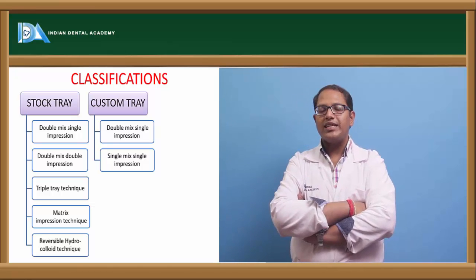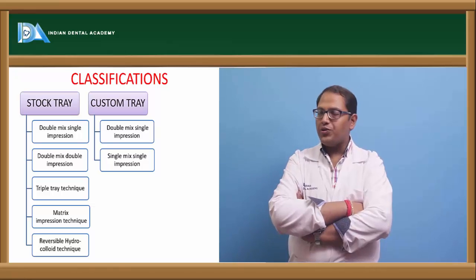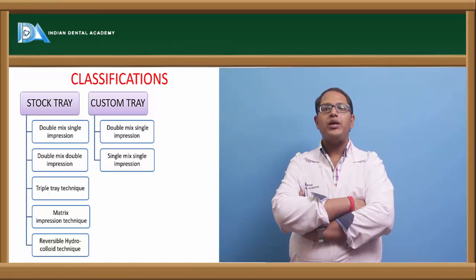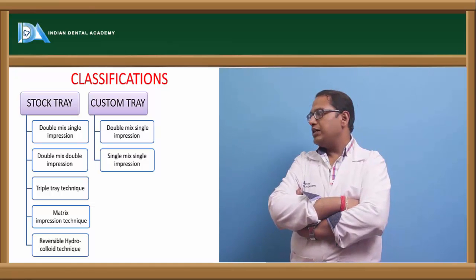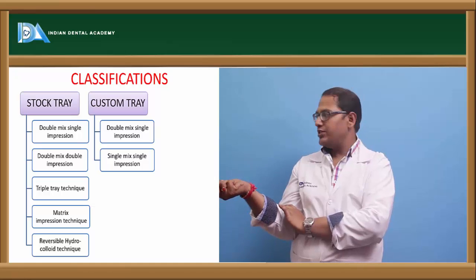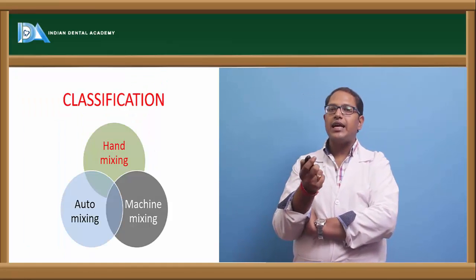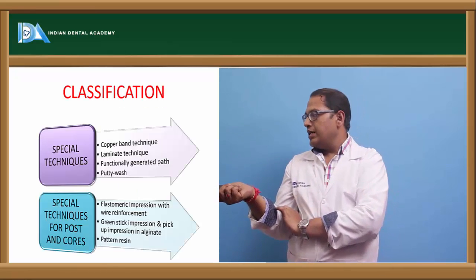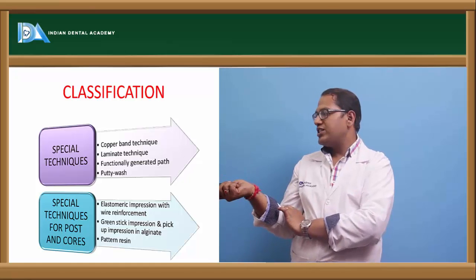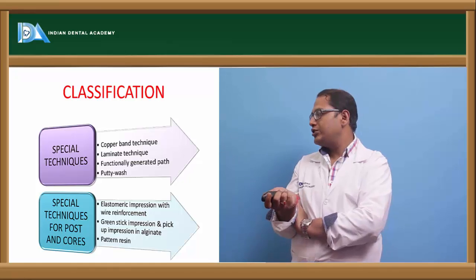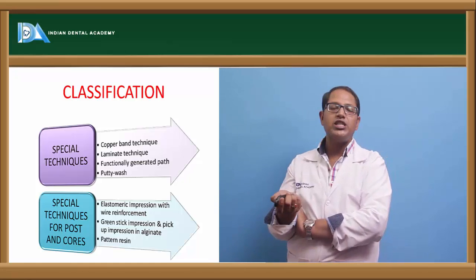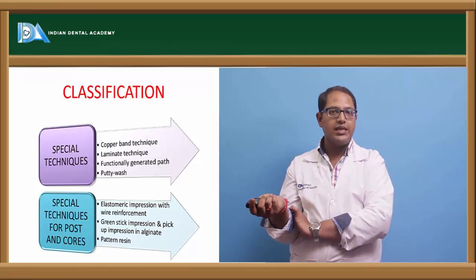The classification of impression techniques includes stock trays and custom trays. With stock trays we have different techniques: double mix single impression, double mix double impression, triple tray technique, matrix impression technique, and reversible hydrocolloid. With custom trays we have double mix single impression or single mix single impression. Classification by mixing method includes hand mixing, machine mixing, or auto mixing. Special mode techniques are copper band technique, laminate technique, functionally generated path, putty wash technique, and special techniques for post and core fixed partial dentures including elastomeric impression with wire reinforcement, green stick impression, pick up impression, and pattern resin technique.